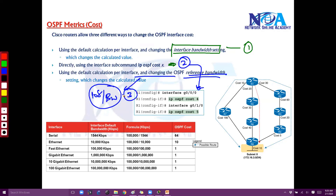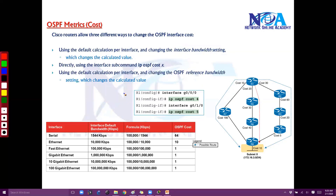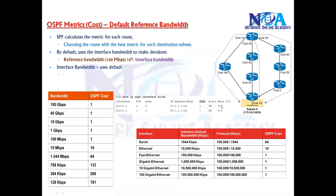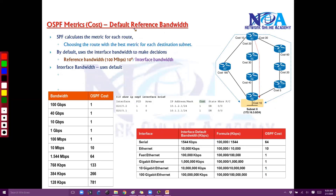Depending upon the configuration commands you do inside OSPF, the calculations will be done accordingly. If no changes are made, the default will be the first option. So let's try to understand the first option — the default — and then we'll look at the other two options which can influence the cost values in your OSPF domain or OSPF configurations.